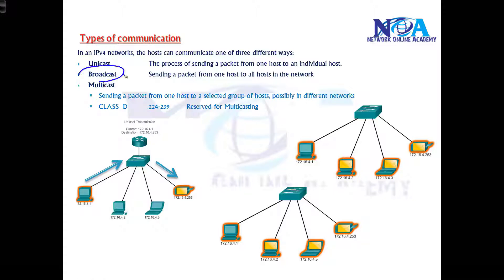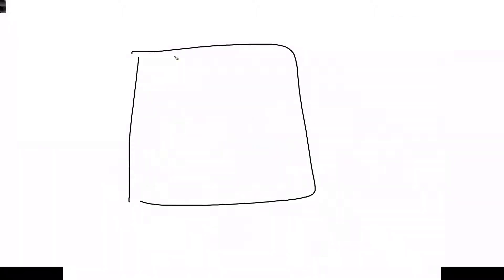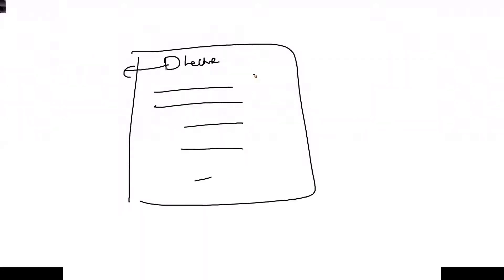Broadcast is one-to-all. Just like if you're sitting in a big hall and someone is conducting a lecture, everyone sitting in that hall can listen. That's broadcasting — everyone can listen within that particular domain, region, or space.